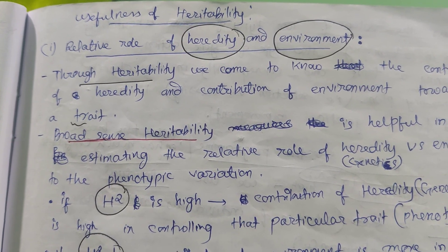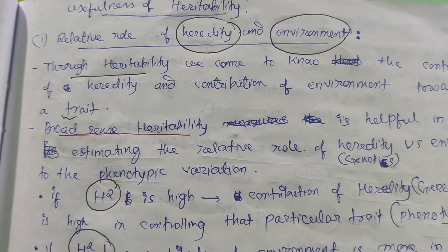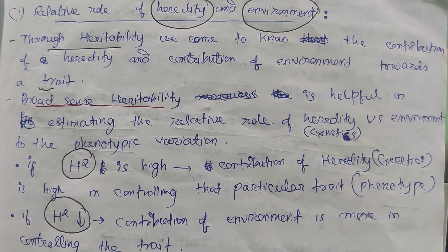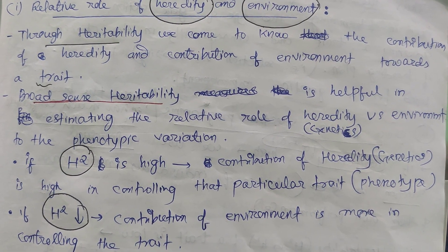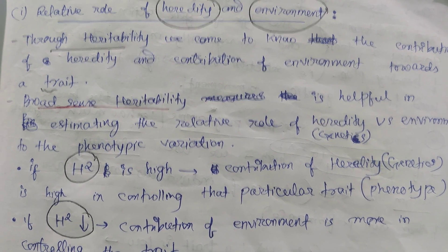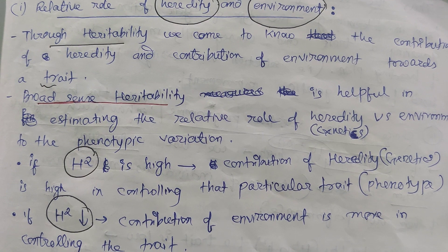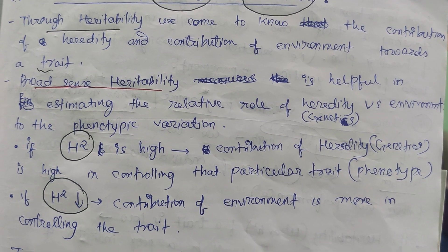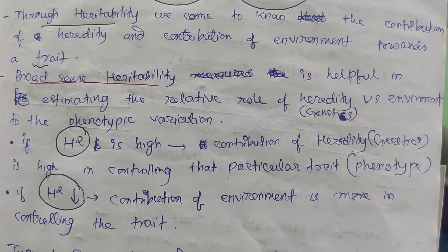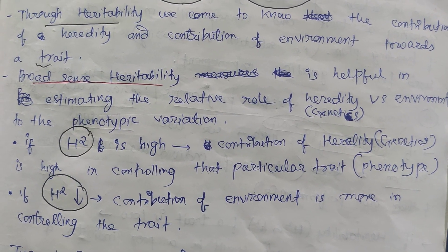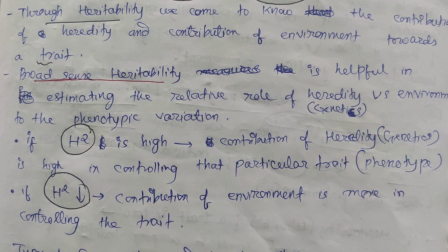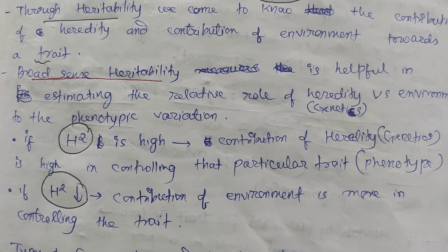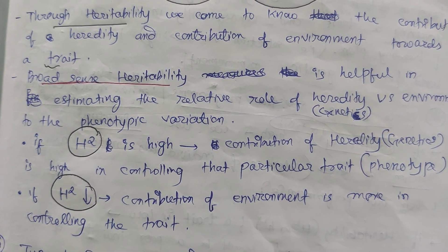Here we will study about the usefulness of heritability. The first point is the relative role of heredity and environment. Through heritability, we come to know the contribution of heredity and environment towards a trait. These contributions can be estimated by broad sense heritability. If broad sense heritability, denoted by capital H², is high, then the contribution of heredity is high in controlling the particular trait.